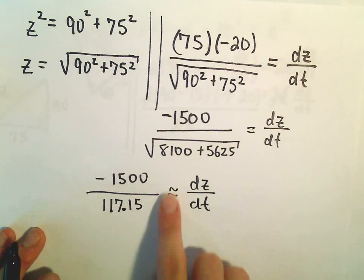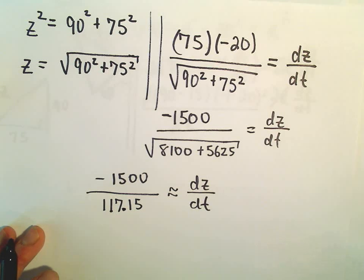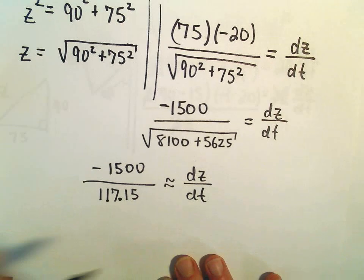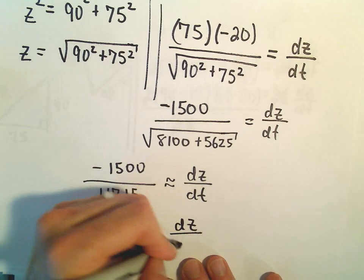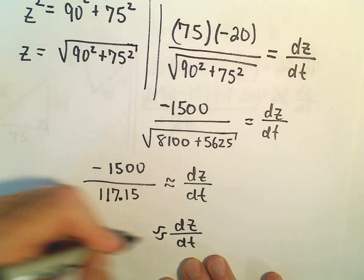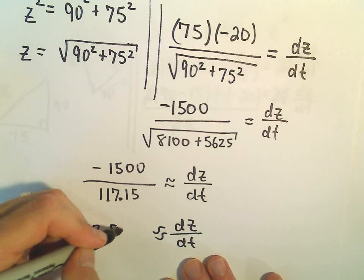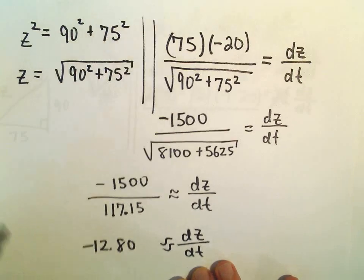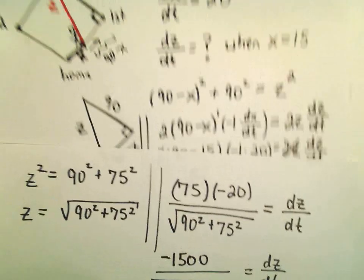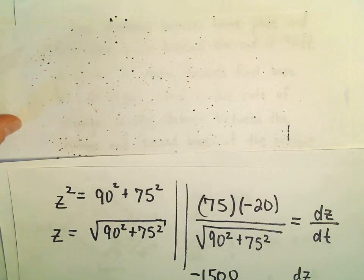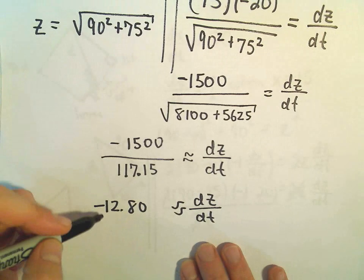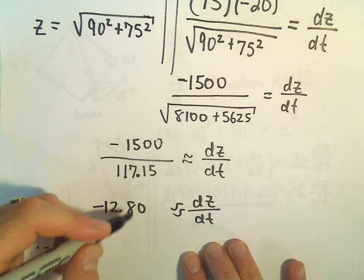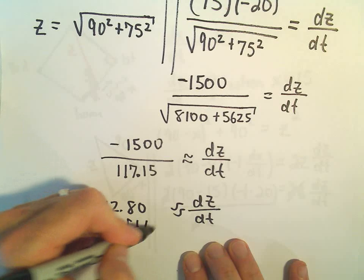So if you haven't seen, the little curvy equal sign just means now we're kind of approximating. So if we do negative 1,500 by 117.15, I'm getting that dz/dt is roughly going to equal negative 12.80. And since we're talking about just a distance here, I think all the units were in seconds, right? That would make sense. So it says the rate is going to equal negative 12.80 feet per second.